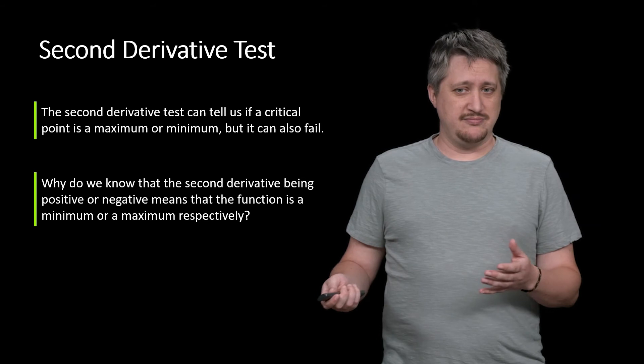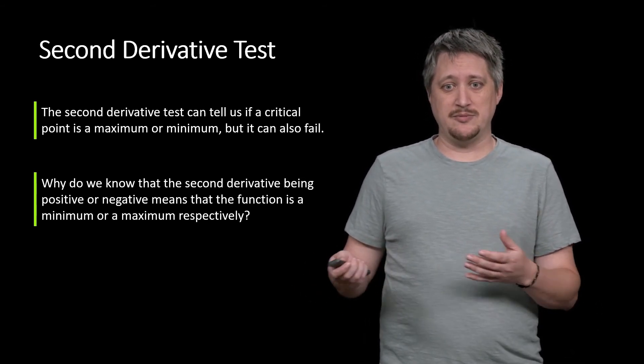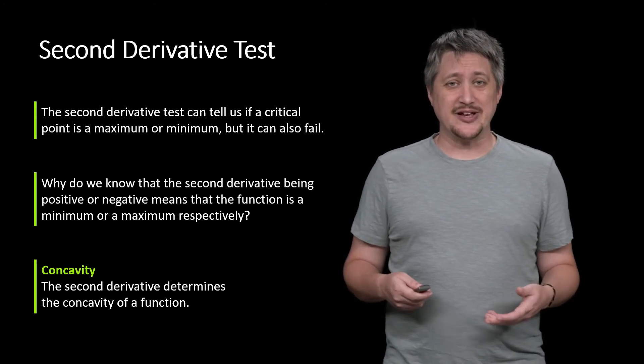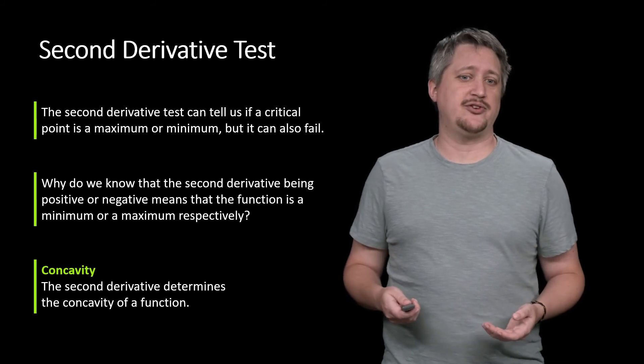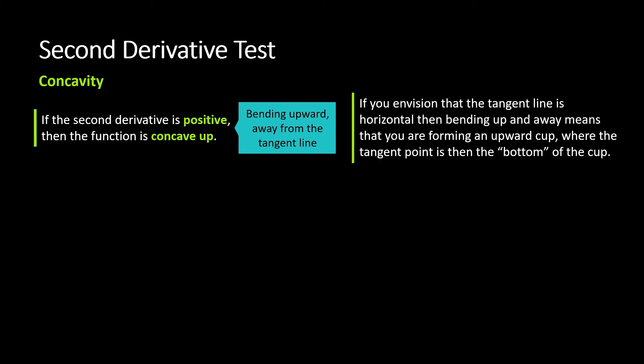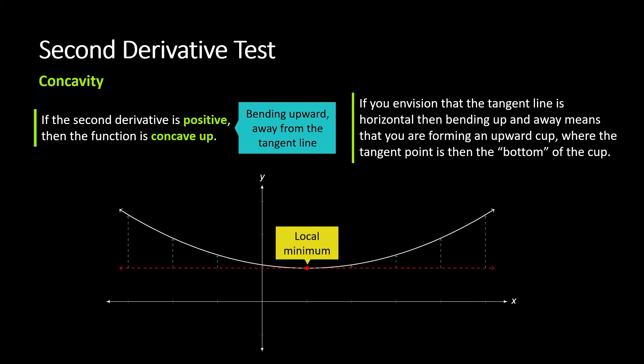Why do we know that the second derivative test being positive or negative means the function has a minimum or maximum there? This is due to our good friend from way back even in pre-calculus: concavity. The second derivative is determining the concavity of the function. If the second derivative is positive, then the function is concave up, bending upward away from the tangent line. If you think of the tangent line as some horizontal line, then being concave up means the function is bending away from it, making some sort of upward cup where the tangent point is at the bottom. The function is bending up and away. That's what positive concavity means. But that means where we were tangent had to be a minimum, because it's bending up and away in both directions.